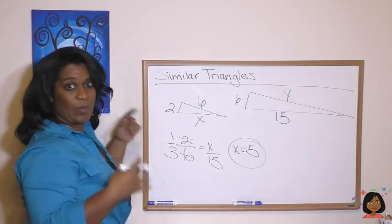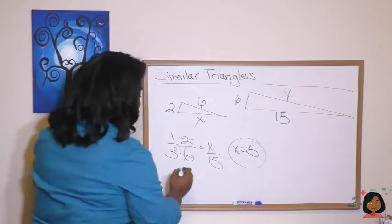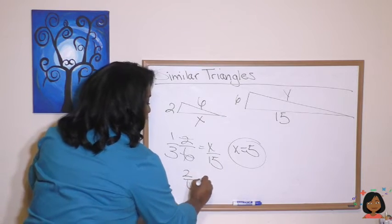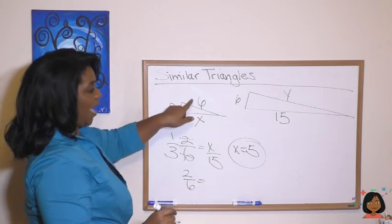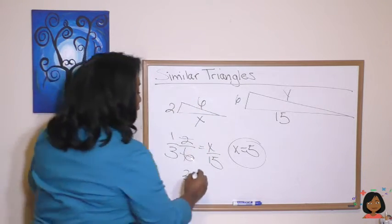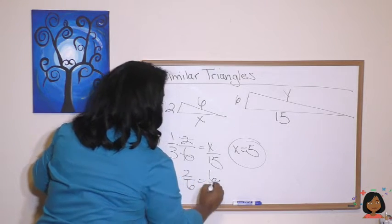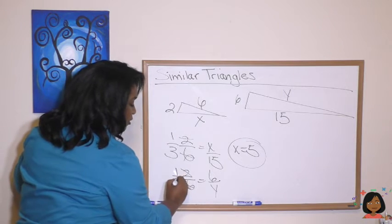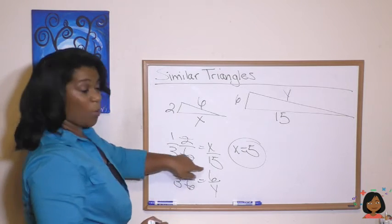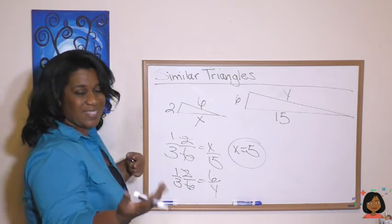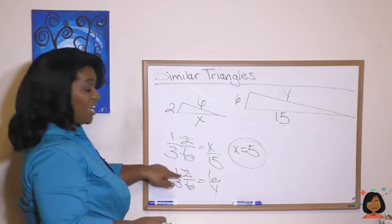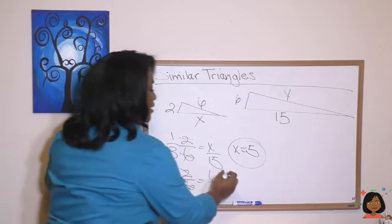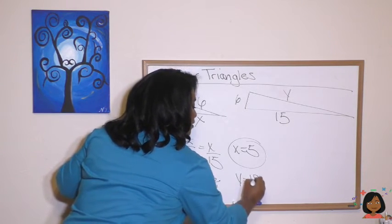And here's the side that we don't know. We have a 6, but we don't know the y. So let's do this. 6 to y. And again, I can simplify this fraction down to 1/3. 1 times what is 6? 1 times 6 is 6. So 3 times 6 is going to be 18. Y is going to be 18.